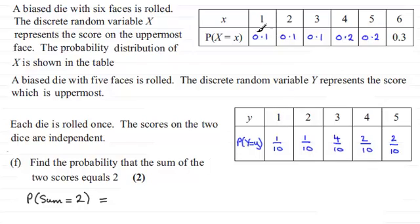Because these have to happen at the same time, it's what we call an 'and' situation, so we multiply those two probabilities together. It's the probability that X equals one times the probability that Y equals one.